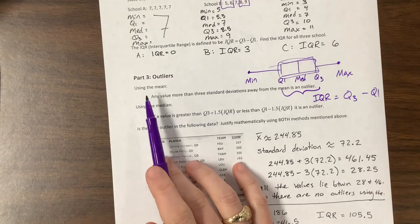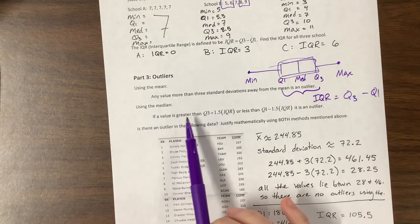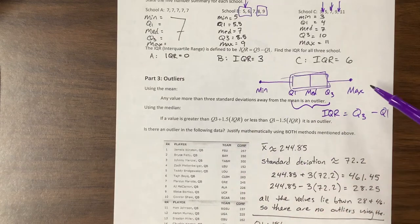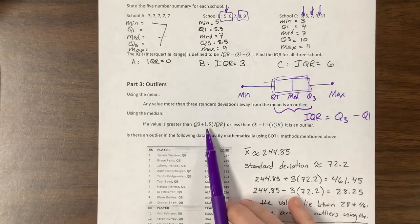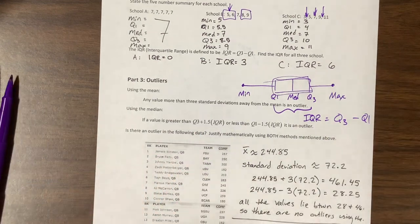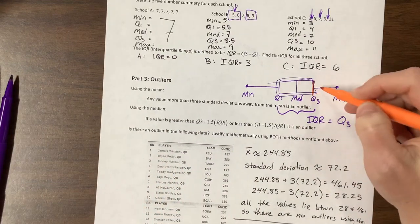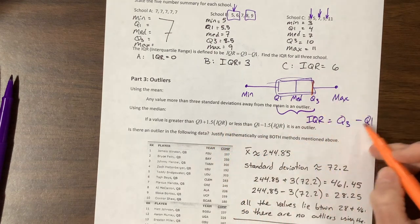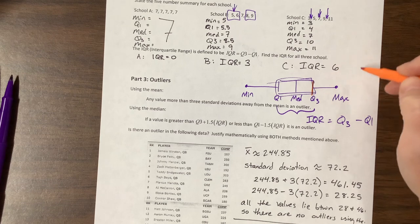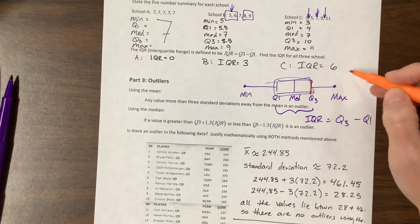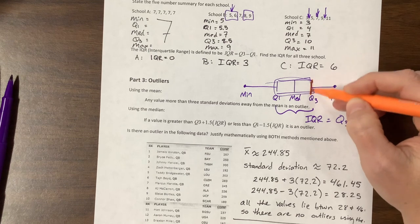The other way to find an outlier is to use the median. And so what we do is we find that IQR, which we just did in the previous video, and we multiply it by 1.5, and then either we add it to Q3. So if this is Q3 and I want to add, then I take 1.5 times the IQR. So 1.5 times 6 would be, well half of 6 is 3, so 3 plus 6 is 9.